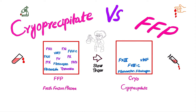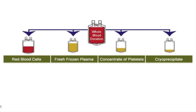Fresh frozen plasma and cryoprecipitate are both blood components made from plasma. Plasma is the yellowish liquid that carries red blood cells, white blood cells, and platelets. Whole blood contains red blood cells, fresh frozen plasma, platelets, and cryoprecipitate.